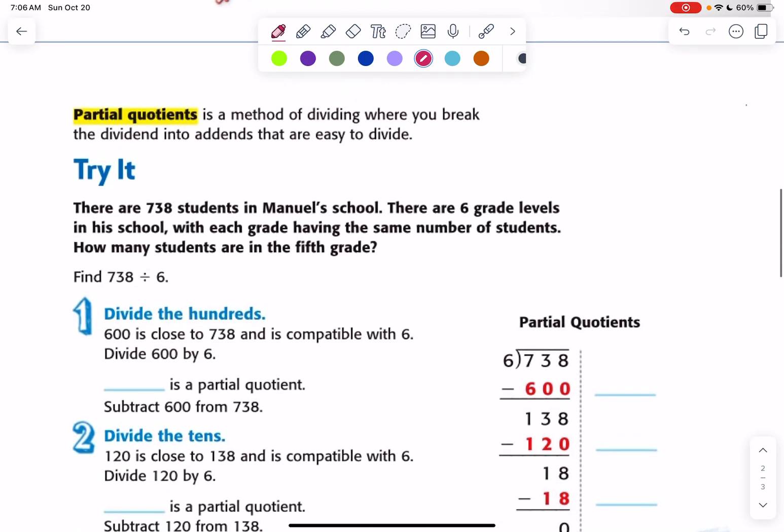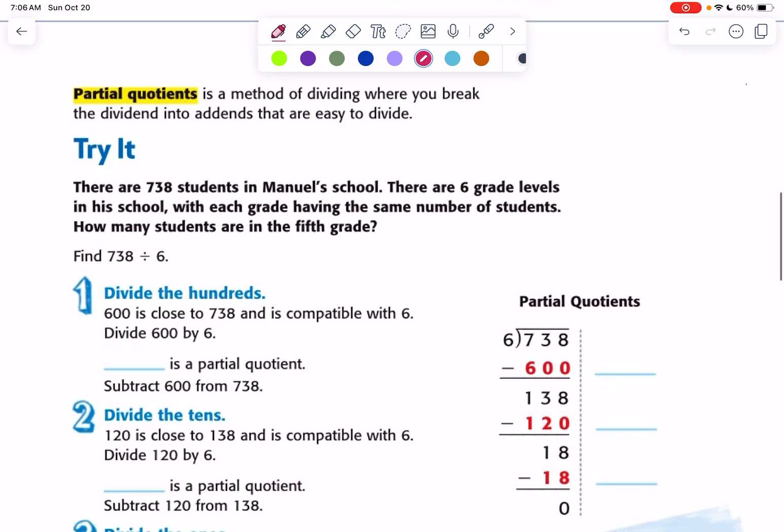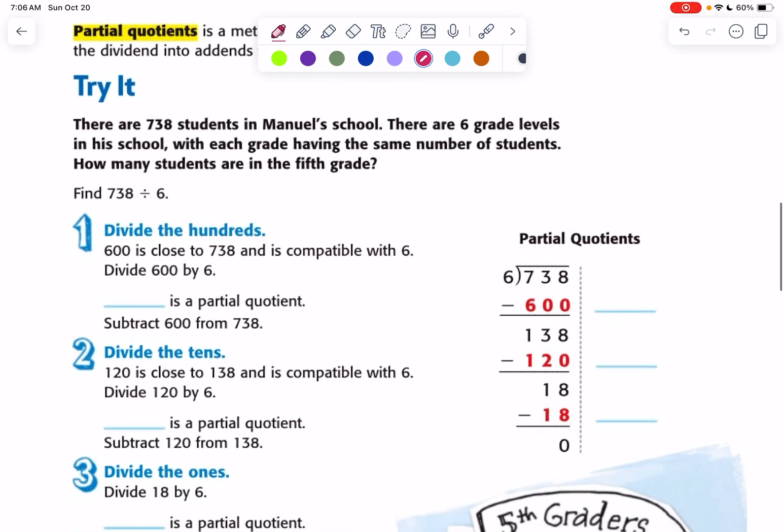This time we'll use partial quotients, which I've seen quite a few of you working on in DreamBox. If you haven't gotten to this yet in DreamBox, you will soon. And now you'll have a preview of how to do it.